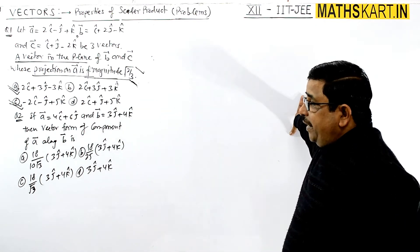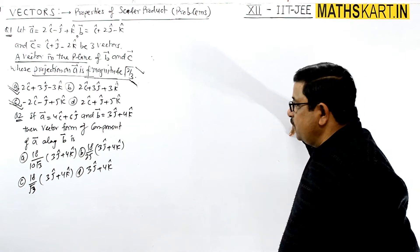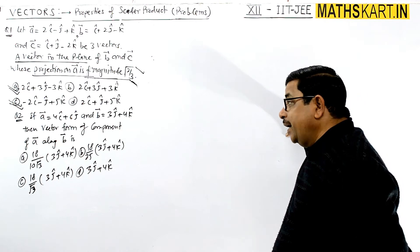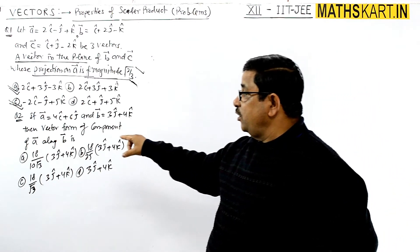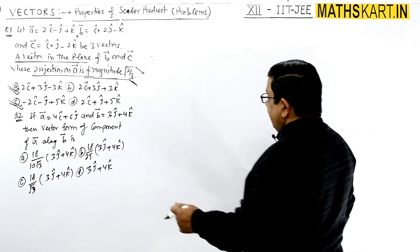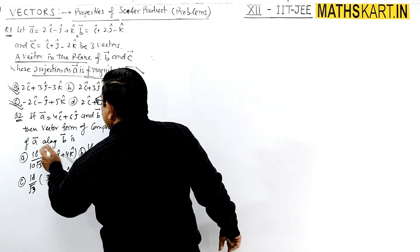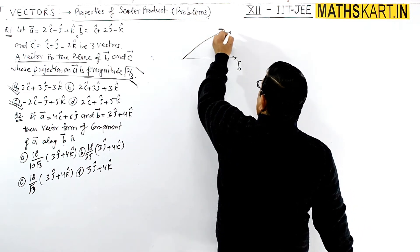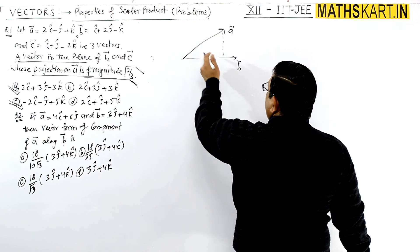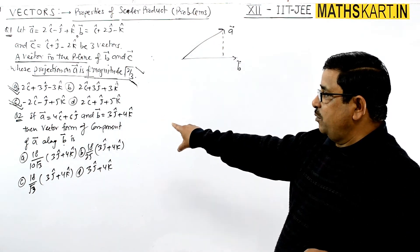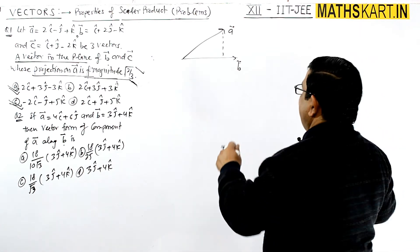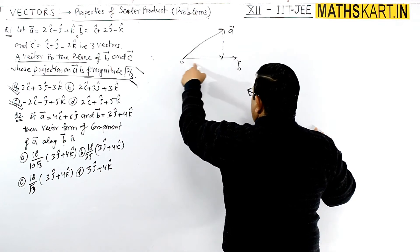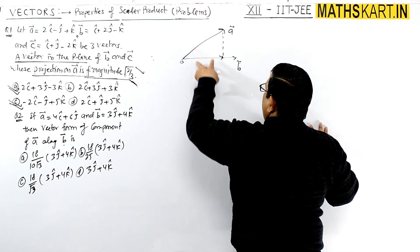Question 2: If a = 4i + 6j and b = 3j + 4k, find the vector form of the component of a along b. So component of a along b is required.